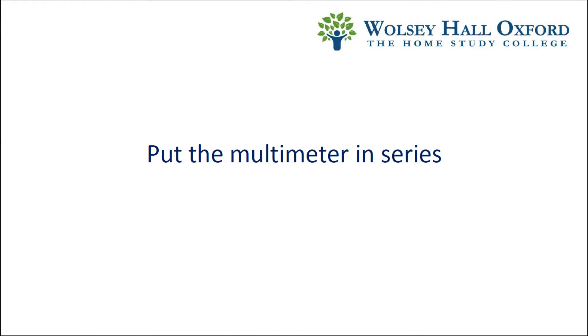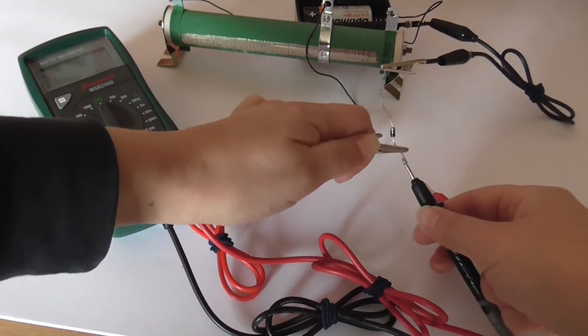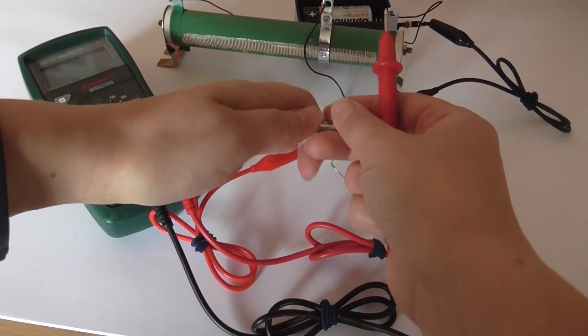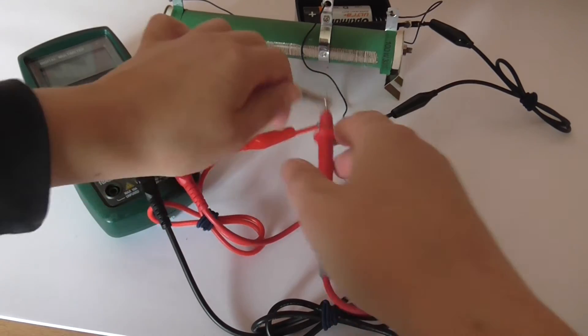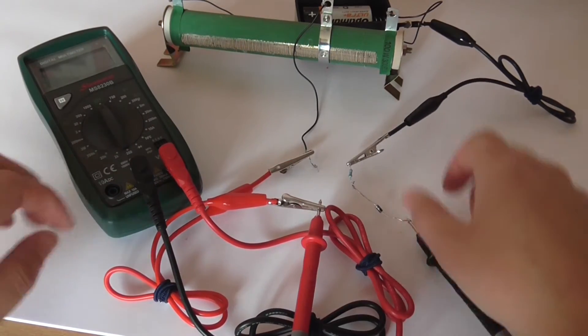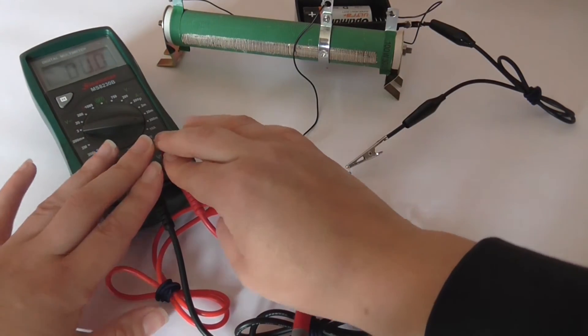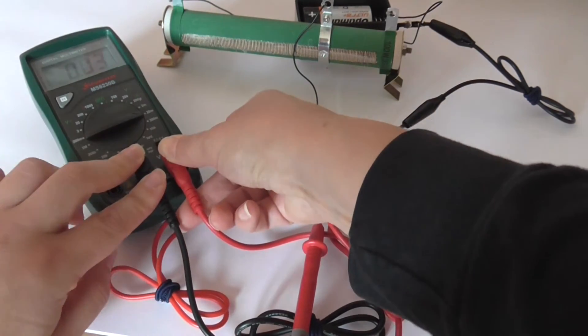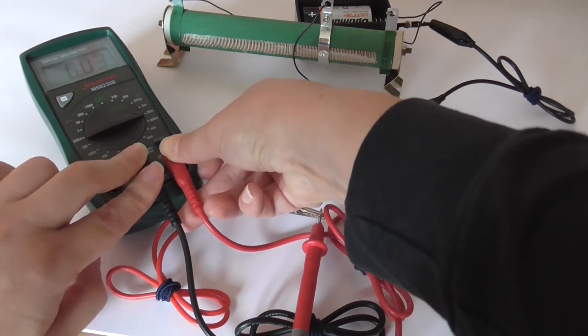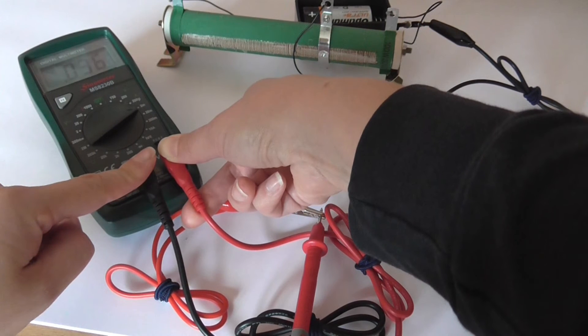To get the ammeter reading, we put it in series. So we take that there and place it here. Turning the ammeter on in the 200 milliamp range gives us nothing. In the 20 milliamp range, it gives us 0.03 milliamps. So we're going to put it down a degree further to the 2 milliamp range. And that gives 0.036 milliamps.